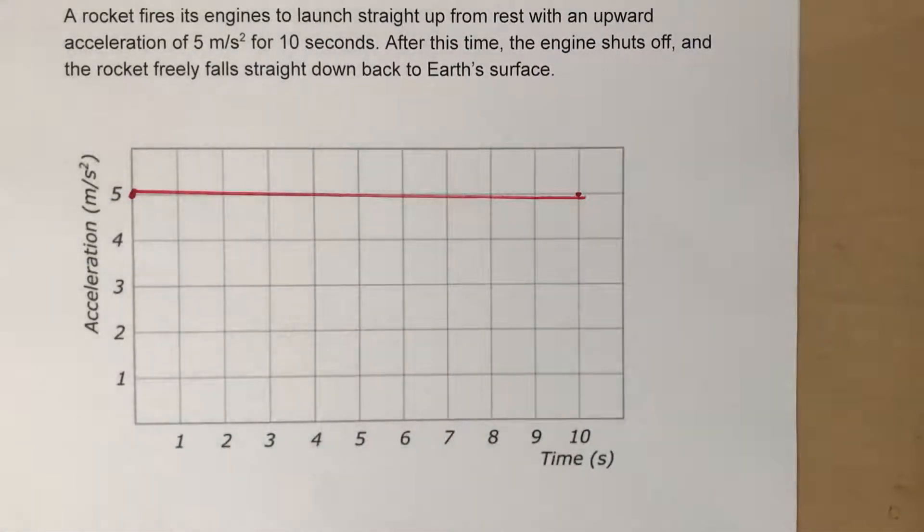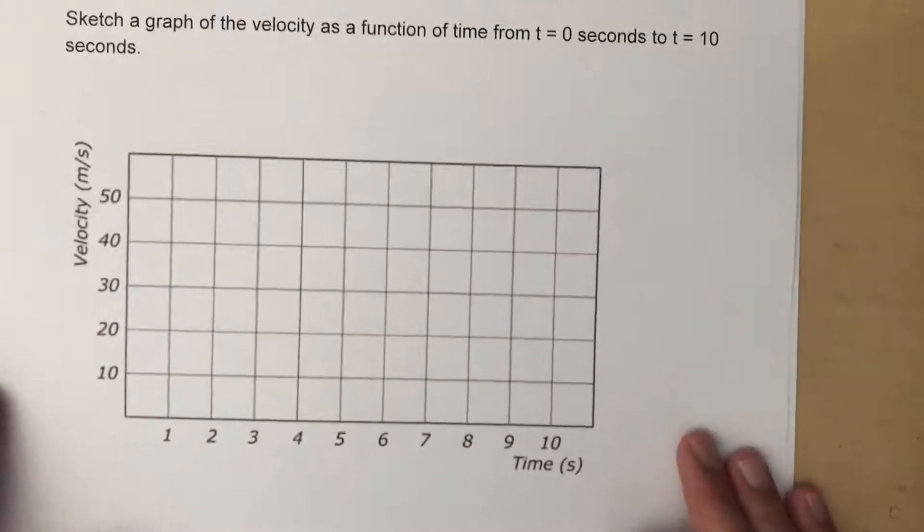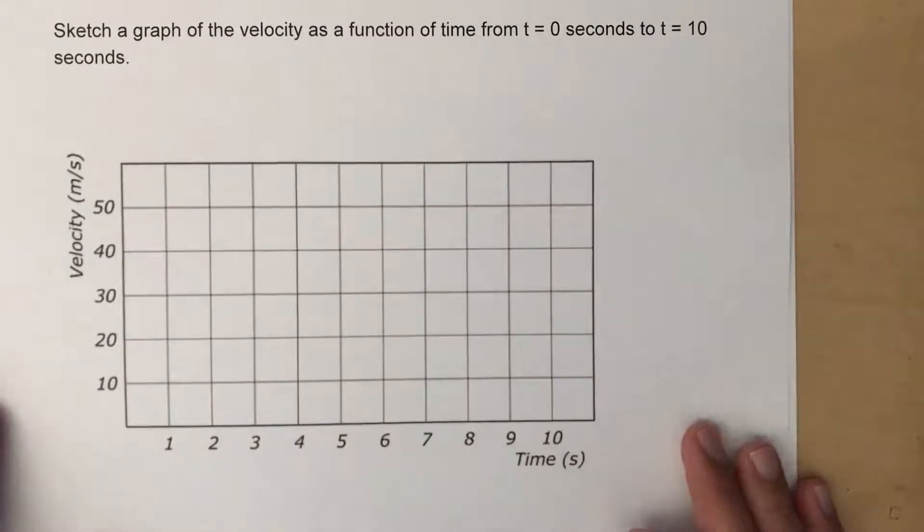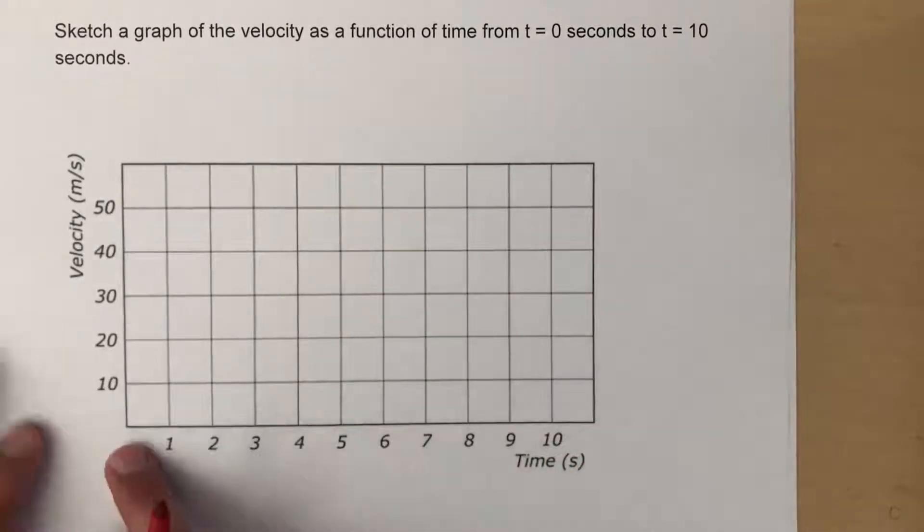The second graph here, they say make a graph now of velocity versus time for the first 10 seconds. So again we can ignore that last second there. Here's the thing.